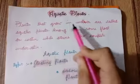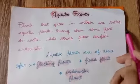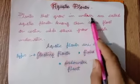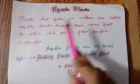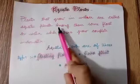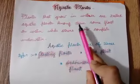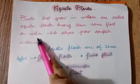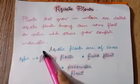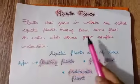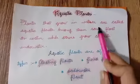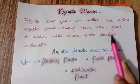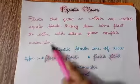Plants that grow in water are called aquatic plants. Among them, some float in water while others grow completely underwater.